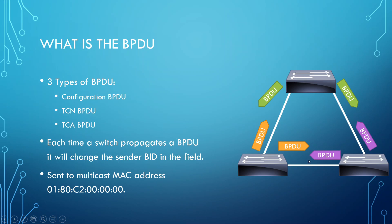As an example of the TCN BPDU: imagine a switch detects a link failure. That switch will send a Topology Change Notification BPDU to its neighbor, essentially letting it know that something has changed in the STP topology. That neighbor will then send back a Topology Change Acknowledgement, or TCA, BPDU, telling the original switch: I have received your TCN BPDU, you don't have to send it again. I acknowledge the topology change and will let my own neighbors know.